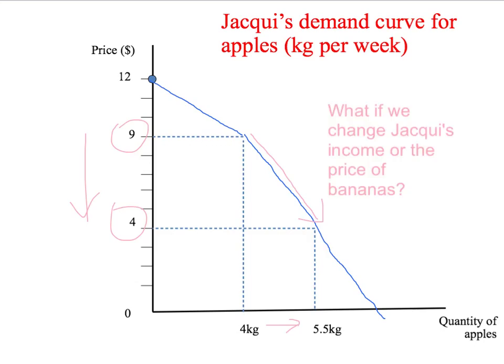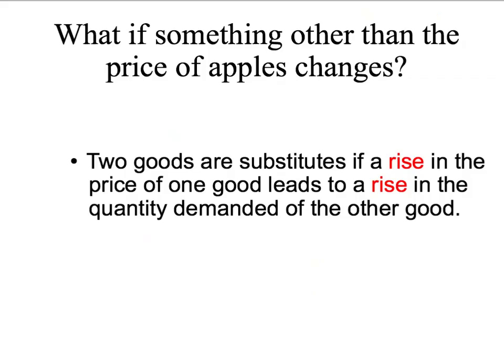But what happens to Jackie's demand curve if we change either her income or the price of bananas? Let's start with a definition. Two goods are substitutes if a rise in the price of one good leads to a rise in the quantity demanded of the other good.